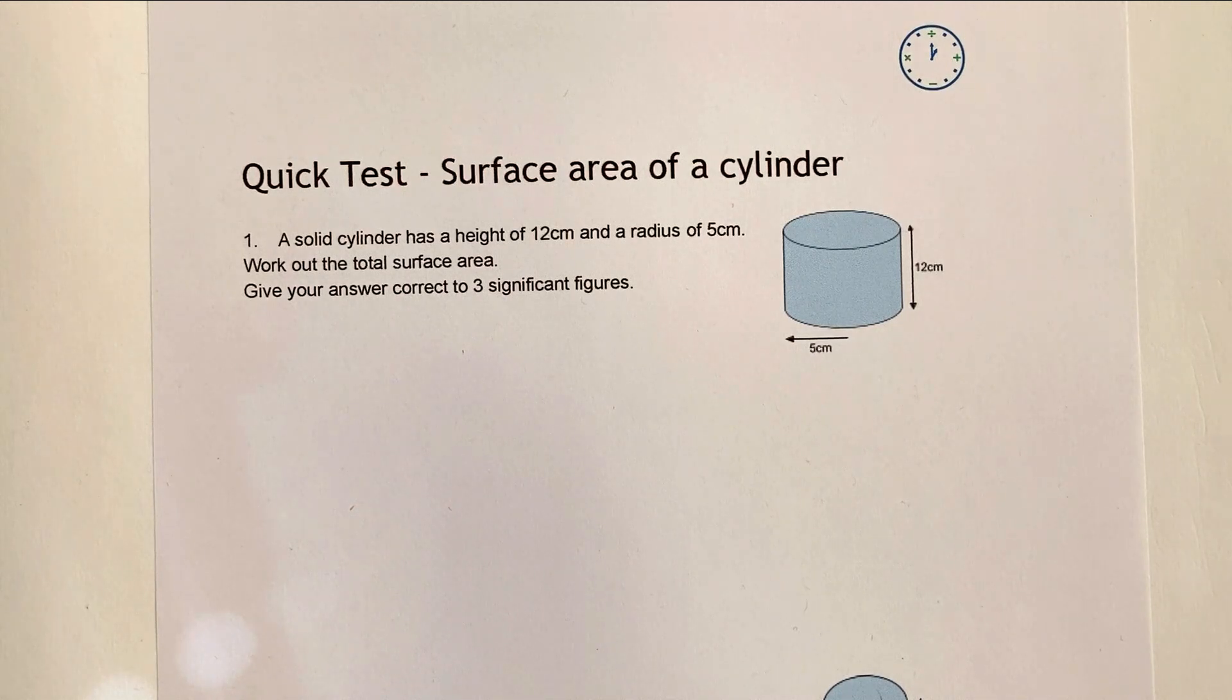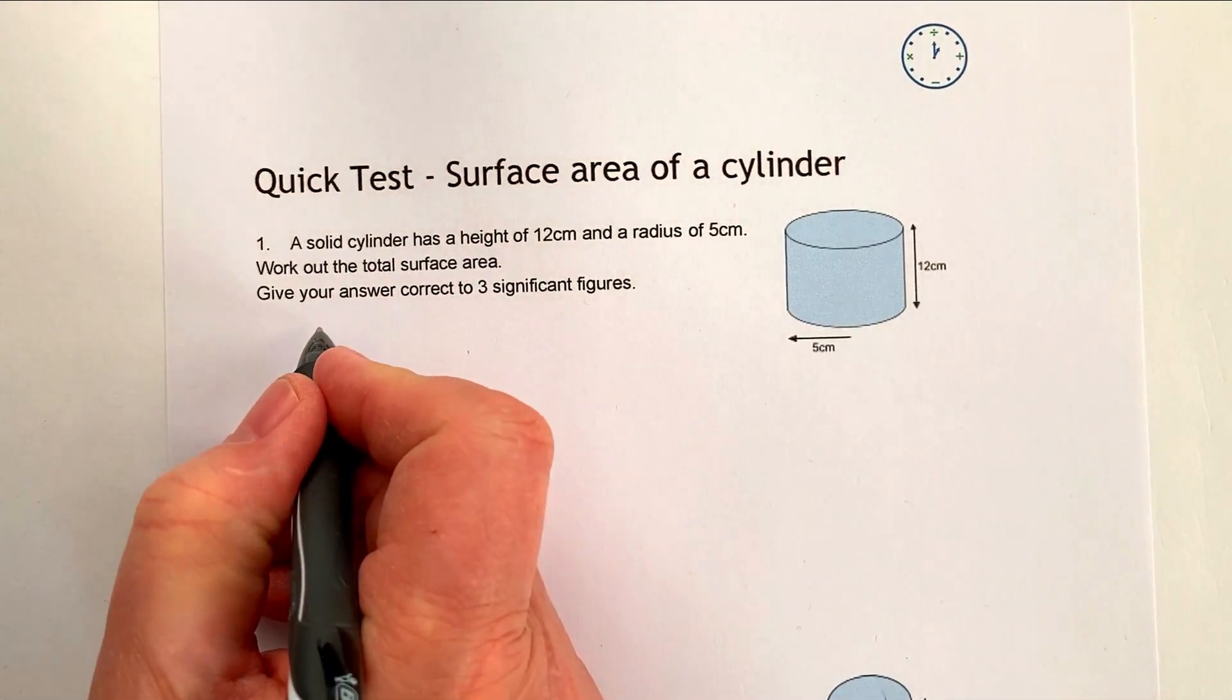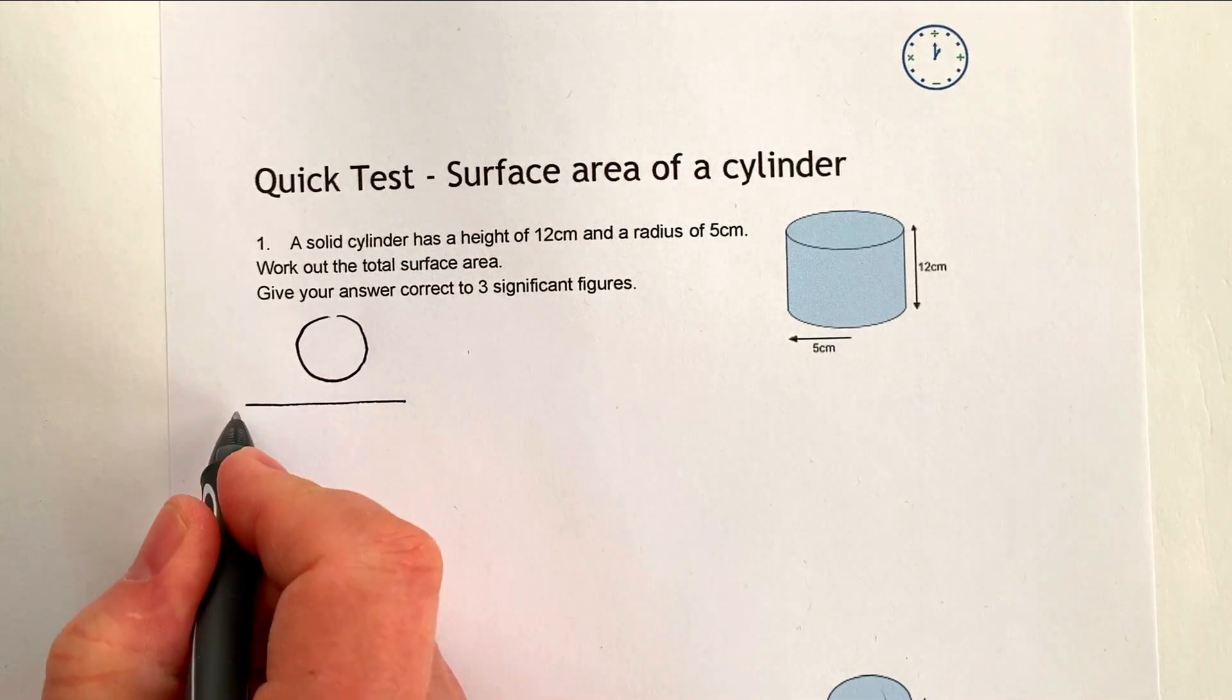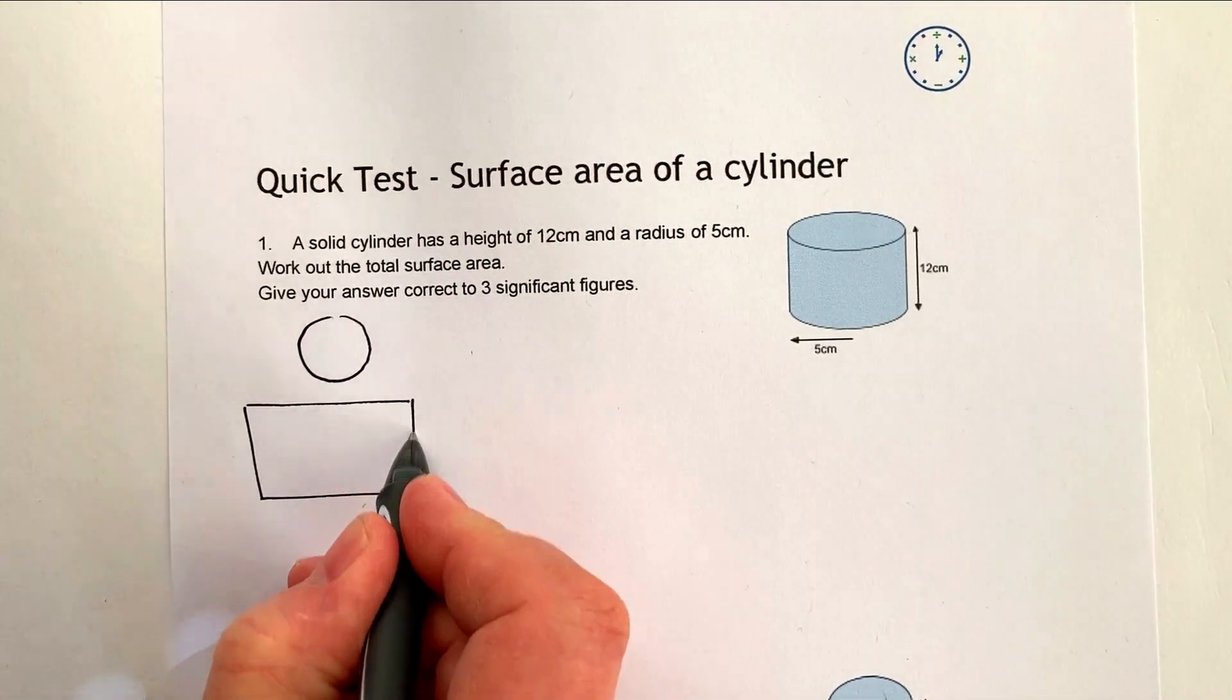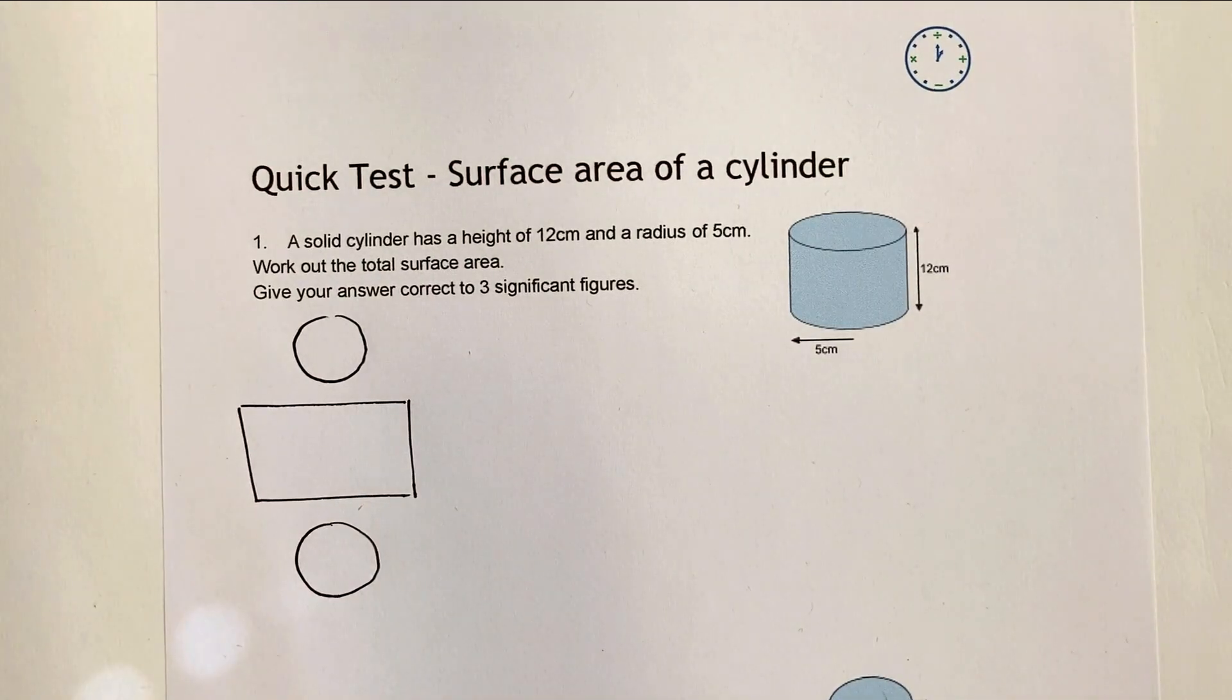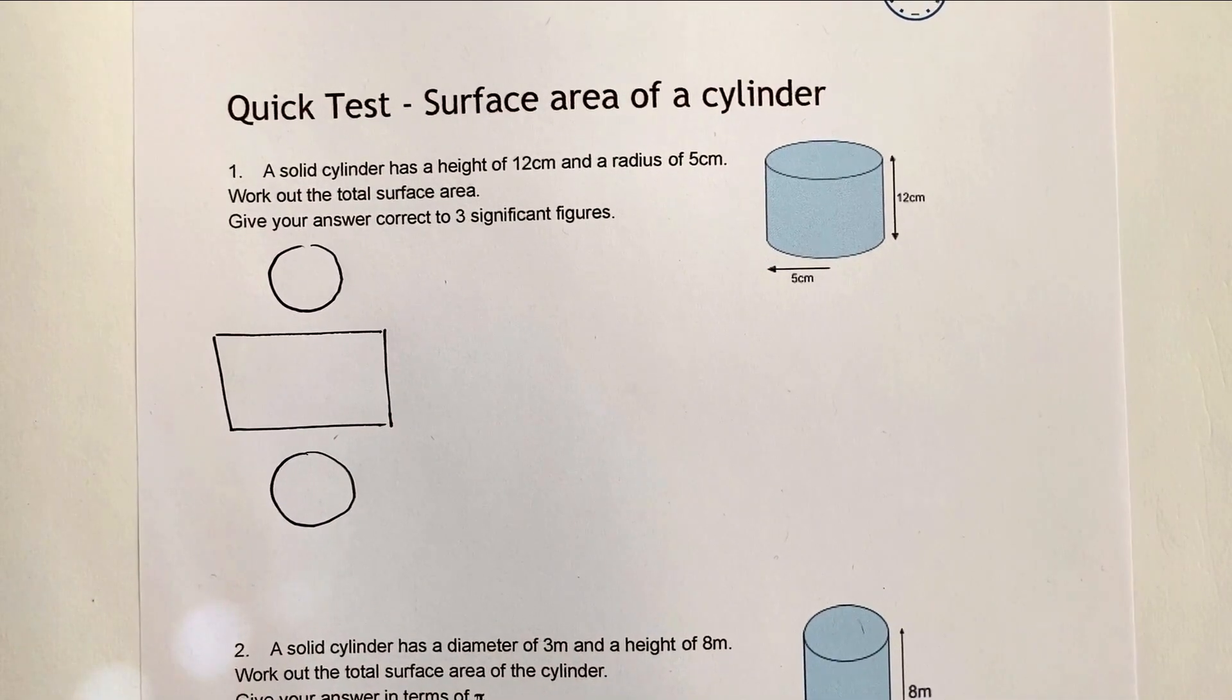Okay, so the first one we've got a solid cylinder with the height of 12cm and the radius of 5cm. Work out the total surface area. Well one of perhaps the best ways of doing these sorts of things is to actually draw a quick sketch first of what it is you're working out. Now the reason I would do that is because it's a bit like perhaps in primary school you would have done nets or something like that.